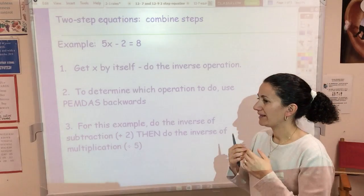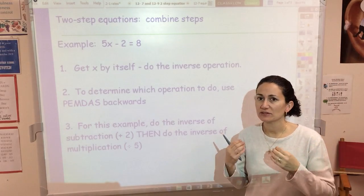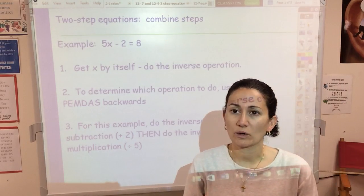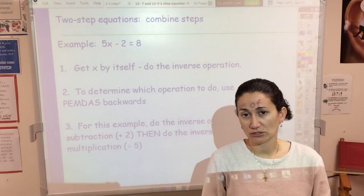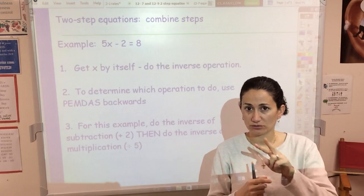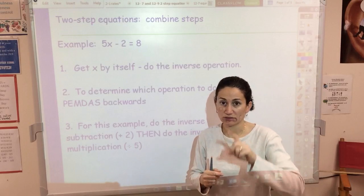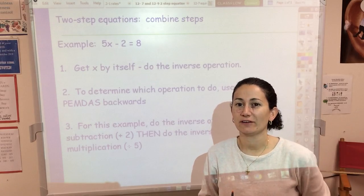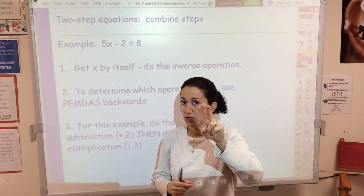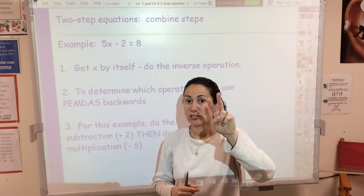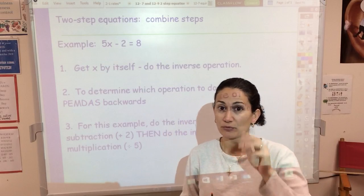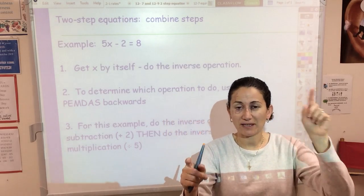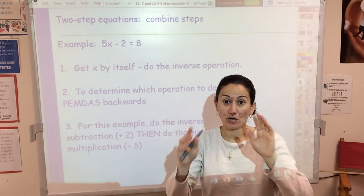All the steps are exactly the same — the steps I taught you about how to solve one-step equations apply to solving two-step equations. So step one is isolate the variable, step two use opposite operations, and step three do the same thing to both sides.